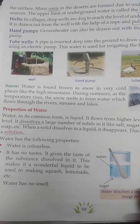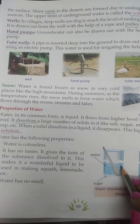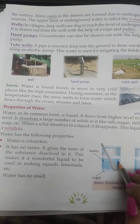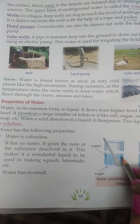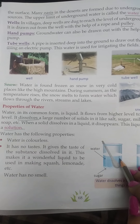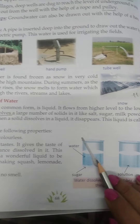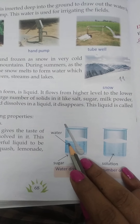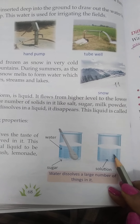We know that water is found in a liquid form and it flows from a higher level to a lower level — water always flows from higher to lower level. Water can dissolve a large number of solids such as salt, sugar, milk powder, soap, etc. When a solid dissolves in a liquid and disappears, this liquid is called a solution. For example, when we dissolve sugar in water and stir it, the sugar dissolves and this becomes a sugar solution.